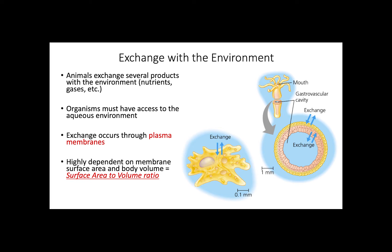Think of unicellular organisms, such as the amoeba shown in the figure. Because this consists of only one cell, the whole membrane is in direct contact with the aqueous environment, allowing individuals to have direct exchange. However, in larger, more complex organisms, such as the hydra shown in the other figure, the two layers of cells must have direct exchange with the environment. The more cells in a body plan, the more complex exchange becomes.